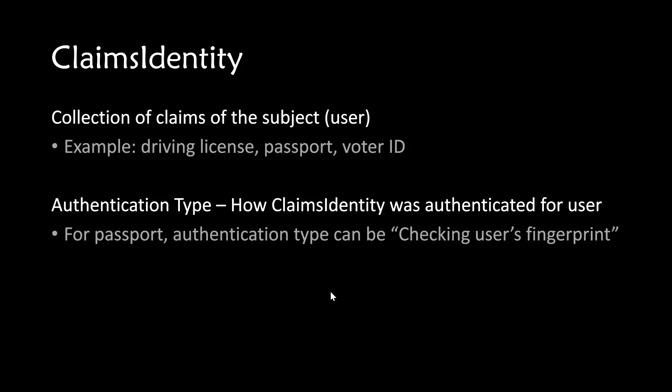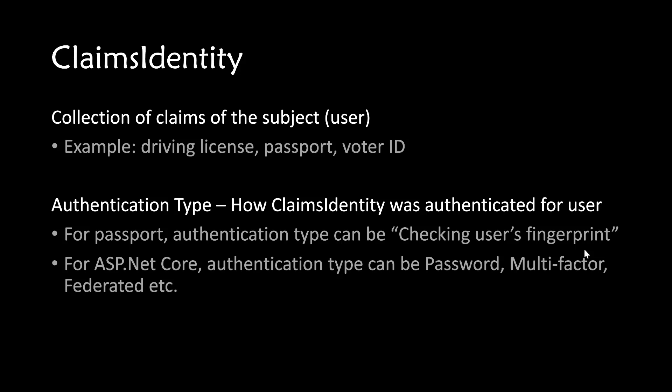One more concept you need to know about claims identity in .NET is it contains a property called authentication type. It specifies how the claims identity was authenticated for the user. For example, in the real world, the claims identity passport can be authenticated to the user by checking his fingerprints. So there can be a procedure to associate the claims identity with the user. For ASP.NET Core applications, the authentication type can be password-based, multifactor, federated, etc.